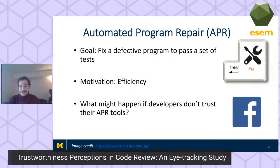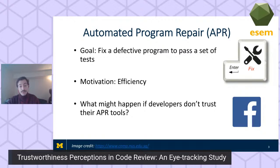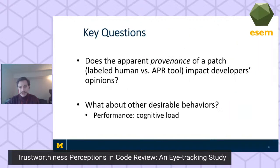If developers trust the code, they will spend less time evaluating it, the code will be more likely to be reused, and maintenance costs will be reduced. To understand why measuring developer trust matters, consider automated program repair (APR). APR allows a team to trade CPU time for more developer time. Facebook, for instance, has deployed APR tools. But if developers don't trust their APR tools, efficiency gains would be at least partially negated.